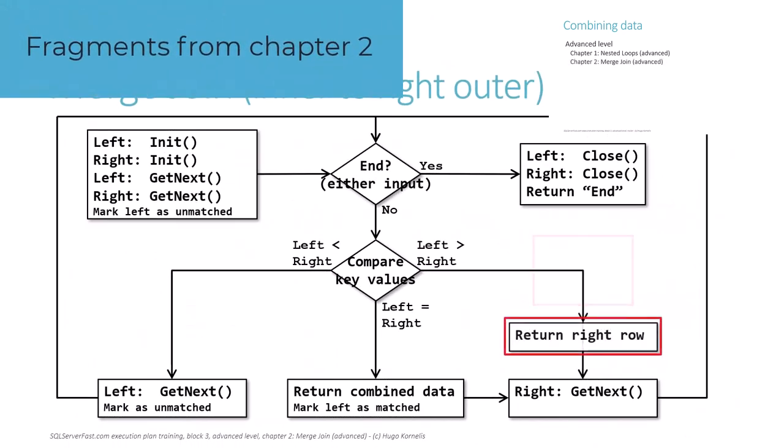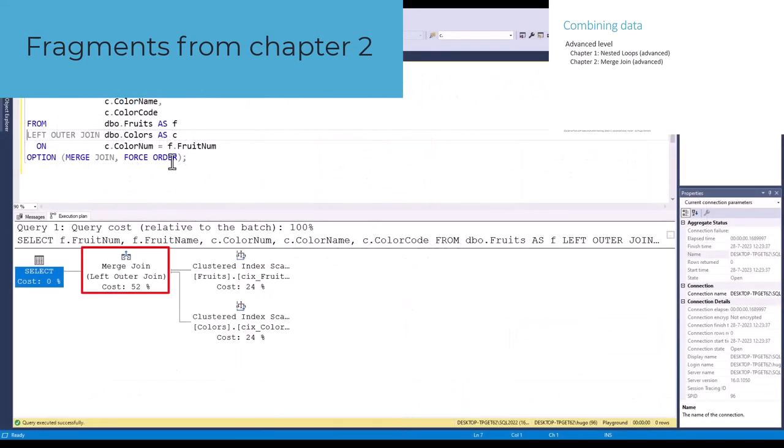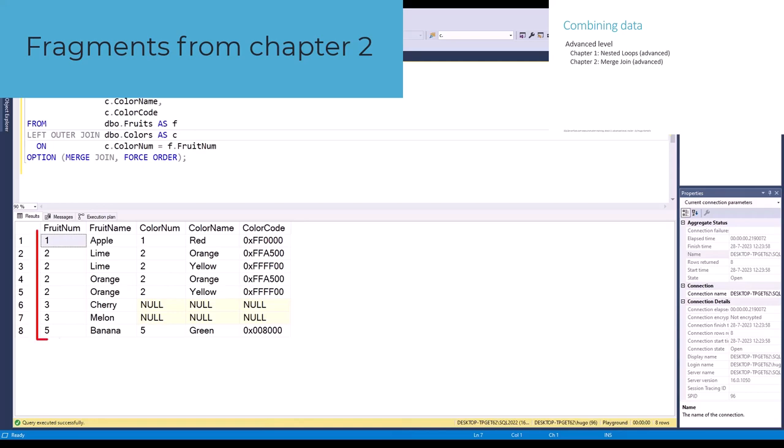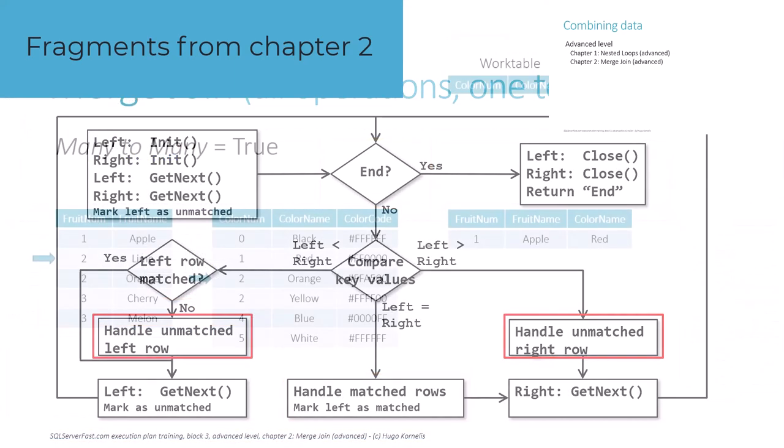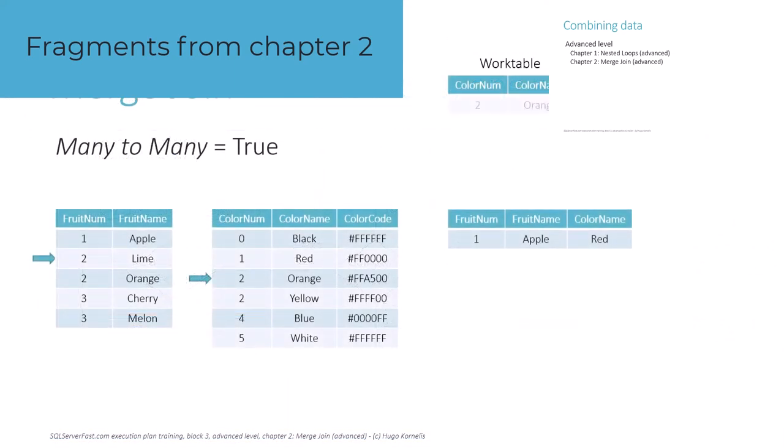The second chapter with advanced topics for merge join once more looks at how the logic can be adapted for each different join type. Again, by looking at flowcharts for each join type first, and then combining all the changes into a single flowchart that actually represents the logic of the operator.